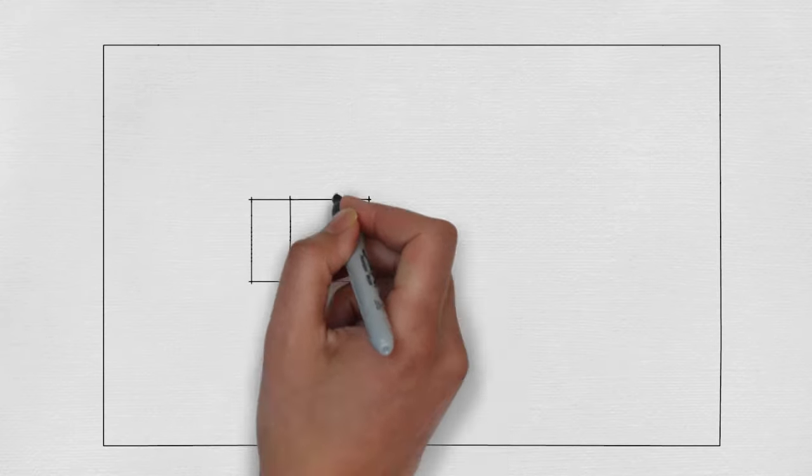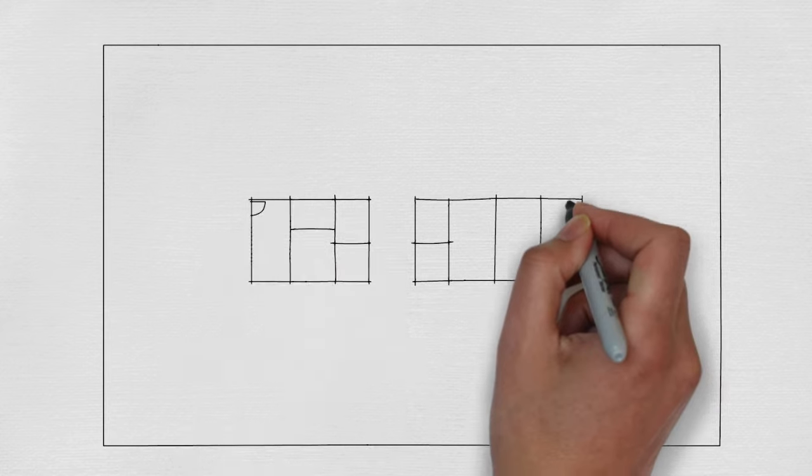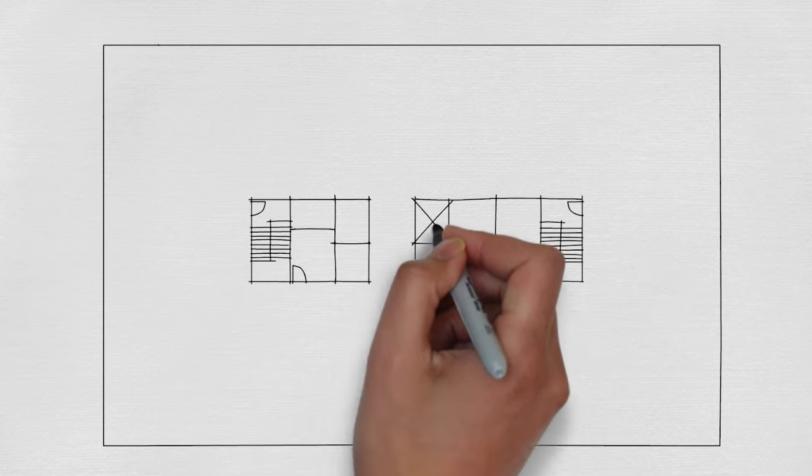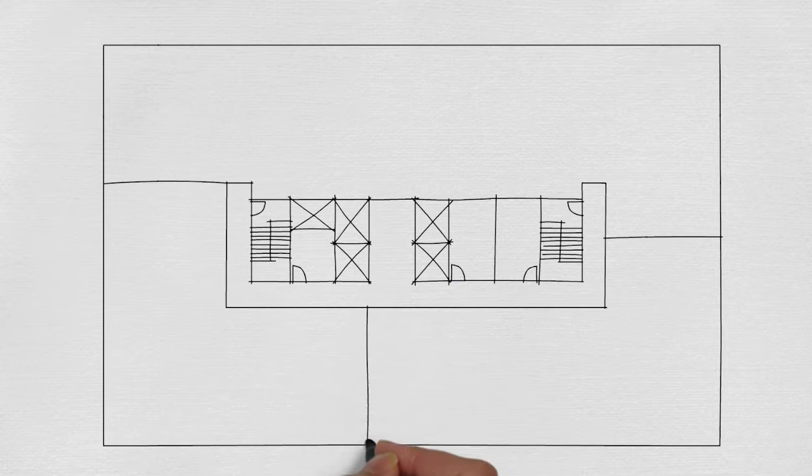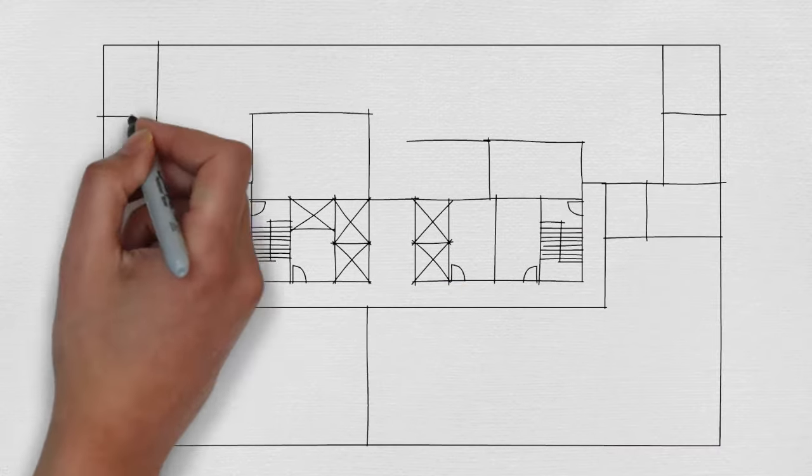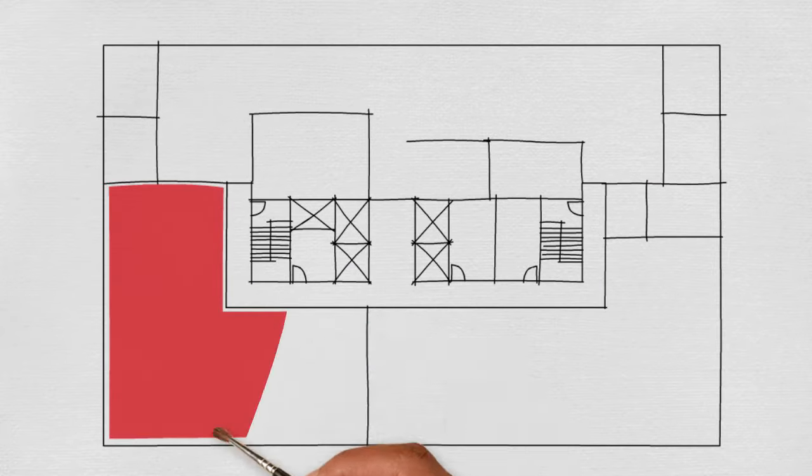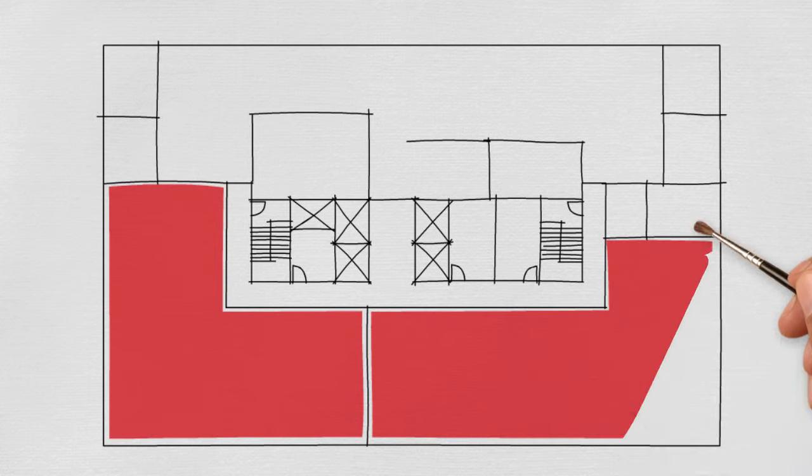Let me show you an example. Here we have a typical floor plan of an office building and like many office buildings the suite we're going to look into only takes a portion of the floor and the rest of the floor is taken by other tenants. Therefore the areas that are shown in red here are the adjacent tenants that are not part of our area.